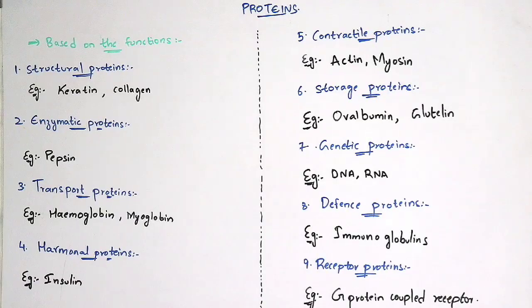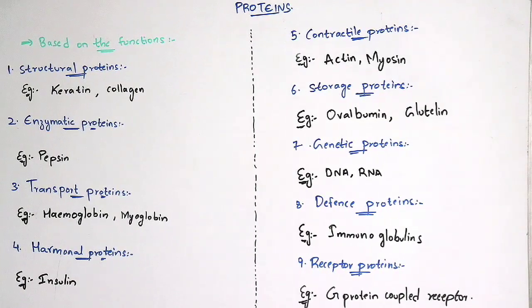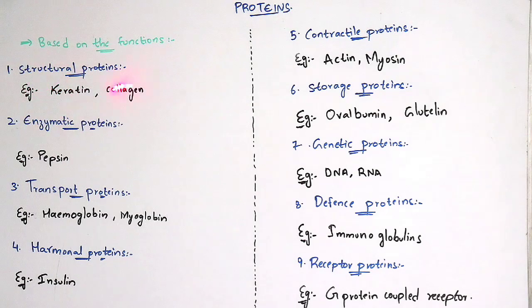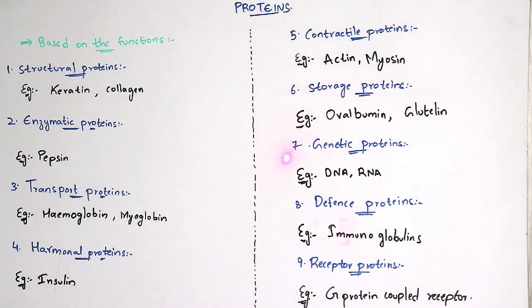Now let us see the functional classification. Based upon the function of proteins, proteins are classified into nine types: structural proteins, enzymatic proteins, transport proteins, hormonal proteins, contractile proteins, storage proteins, genetic proteins, defense proteins, and receptor proteins.